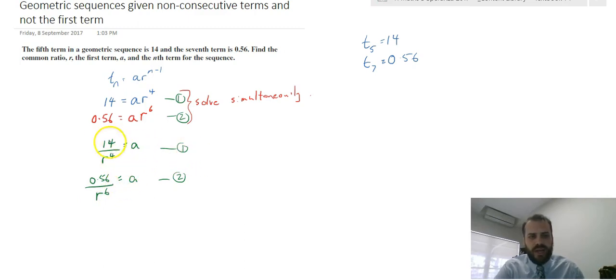So if a equals 14 over r to the 4 and a equals 0.56 over r to the 6, that means that these must be equal to each other. So sub equation 1 into equation 2, 14 over r to the 4 equals 0.56 over r to the 6.